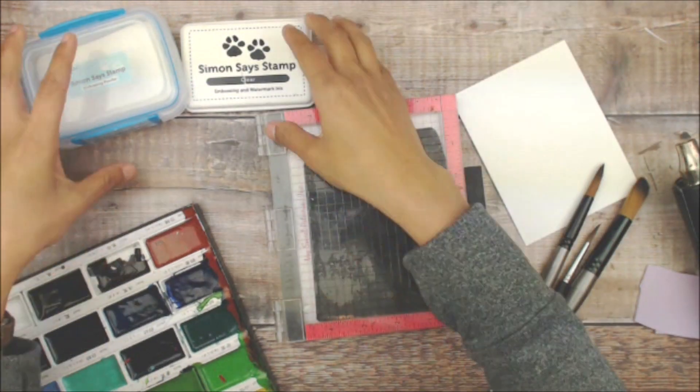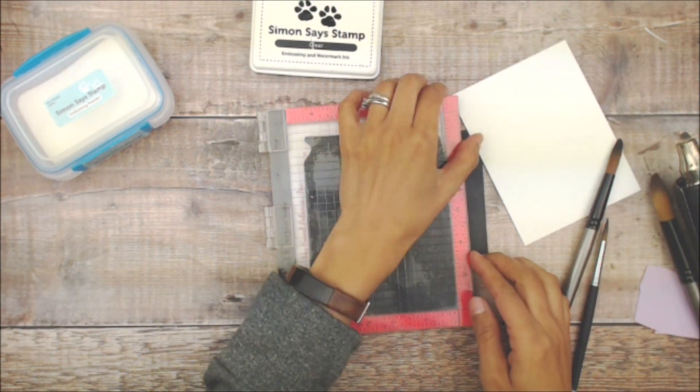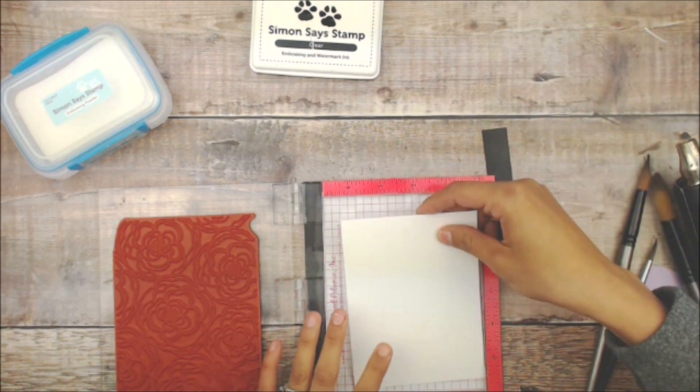For May of 2018, I'll be using watercolors, white embossing powder, clear ink pad, and my Misti stamp positioner.